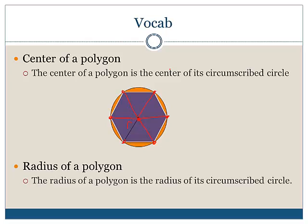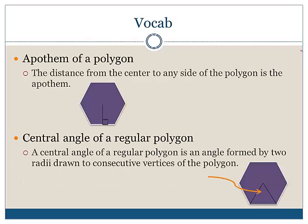The apothem of a polygon is the distance from the center to any side of the polygon. The apothem starts at the center of our polygon and goes straight down to one of the sides, creating a right angle. The central angle of a regular polygon is an angle formed by two radii drawn to consecutive vertices of the polygon.